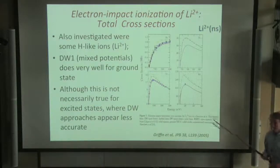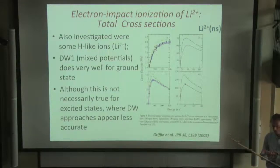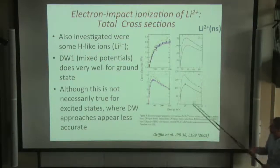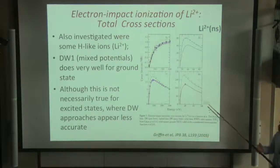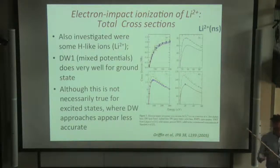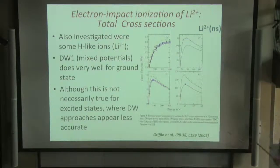Don's study also looked at hydrogen-like lithium (Li 2+). Here, one distorted wave calculation using a mixed potential — VN for incident and scattered, VN-1 for ejected — agreed very well with experiment and close coupling for the ground state, while VN-1 for all was a little off. But for excited states, the distorted wave calculation was significantly off, especially for more highly excited states. So even when the distorted wave may appear accurate for the ground state, that's not necessarily the case for excited states — something instructive for plasma modeling.